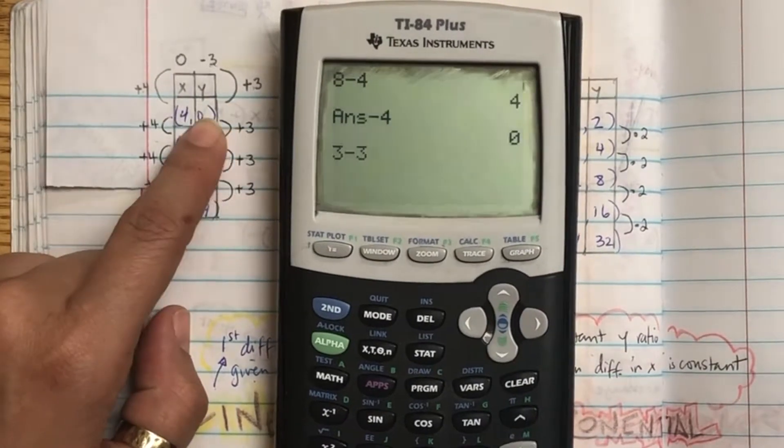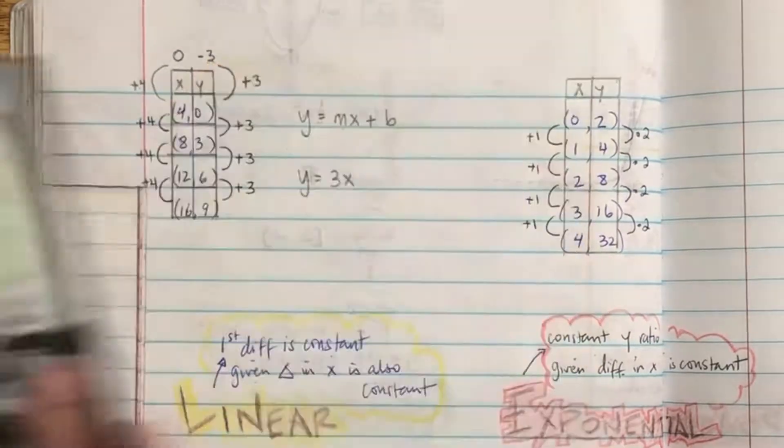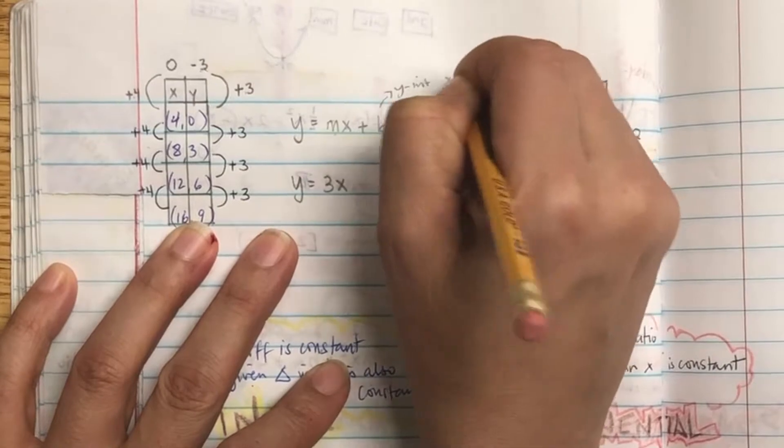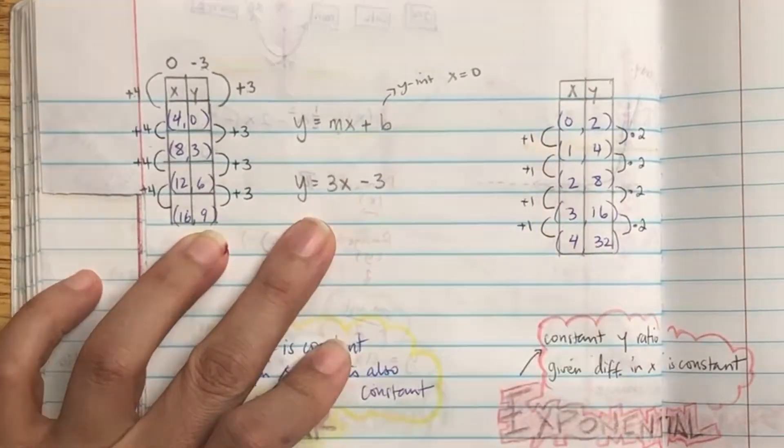I'm just checking with the calculator just to make sure. So the plus b part is negative 3. And if you like, you can actually put the equation into the calculator in the second table and make sure your table matches.